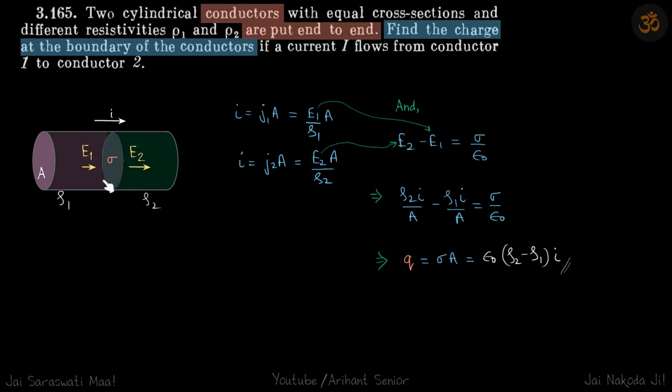So the charge will accumulate so that the ratio of E by Rho remains the same on both sides. Because when this ratio remains the same on both sides, then only the current will be the same.